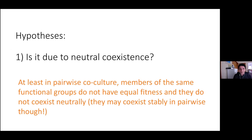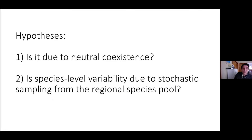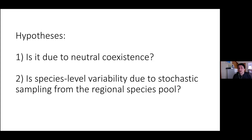So the idea of pairwise neutral coexistence doesn't seem to hold, although I'll revisit this at the end with some intriguing findings we are following up on. The second hypothesis — whether species-level variation could be due to stochastic sampling from the regional species pool — means that some habitats may get certain species while others don't. Even if a species would be a better competitor, if it is not sampled it cannot win. The rest of today's work was done by Sylvia Estrella, an incredibly talented postdoctoral scientist in the lab.